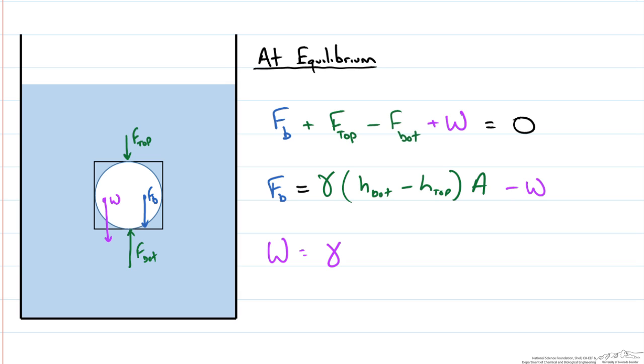So if the whole cube was filled with water it would just be the specific weight of the fluid, again times the height of the cube, so this is H_bottom minus H_top, times the horizontal area. That gives us the volume of our cube.